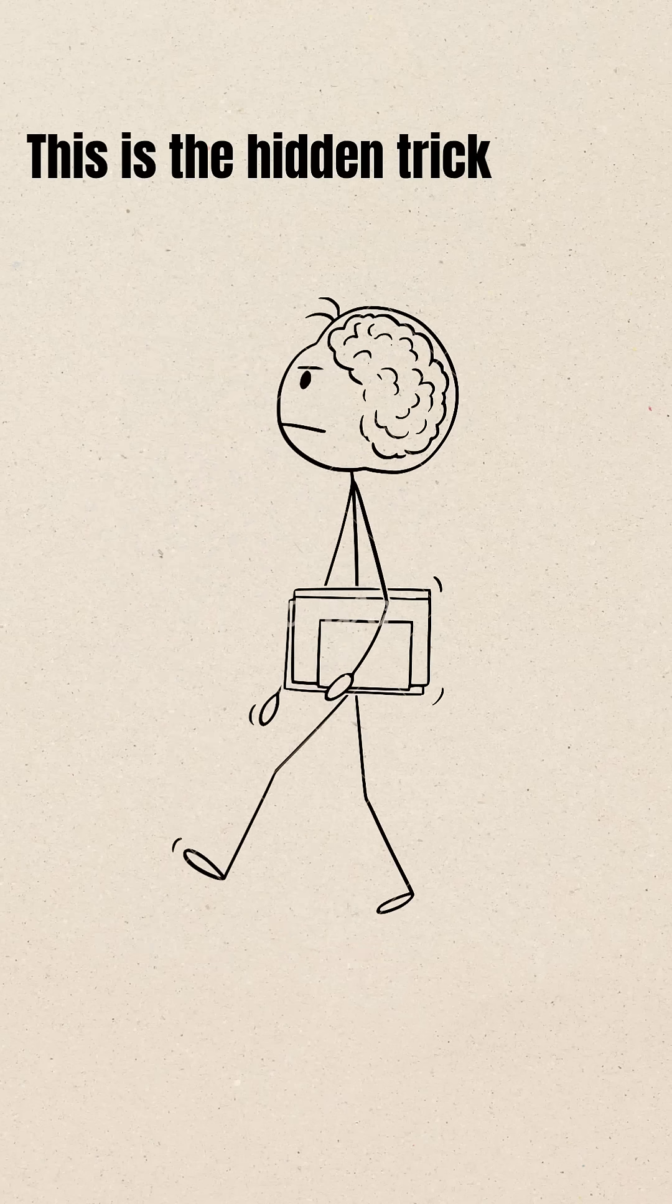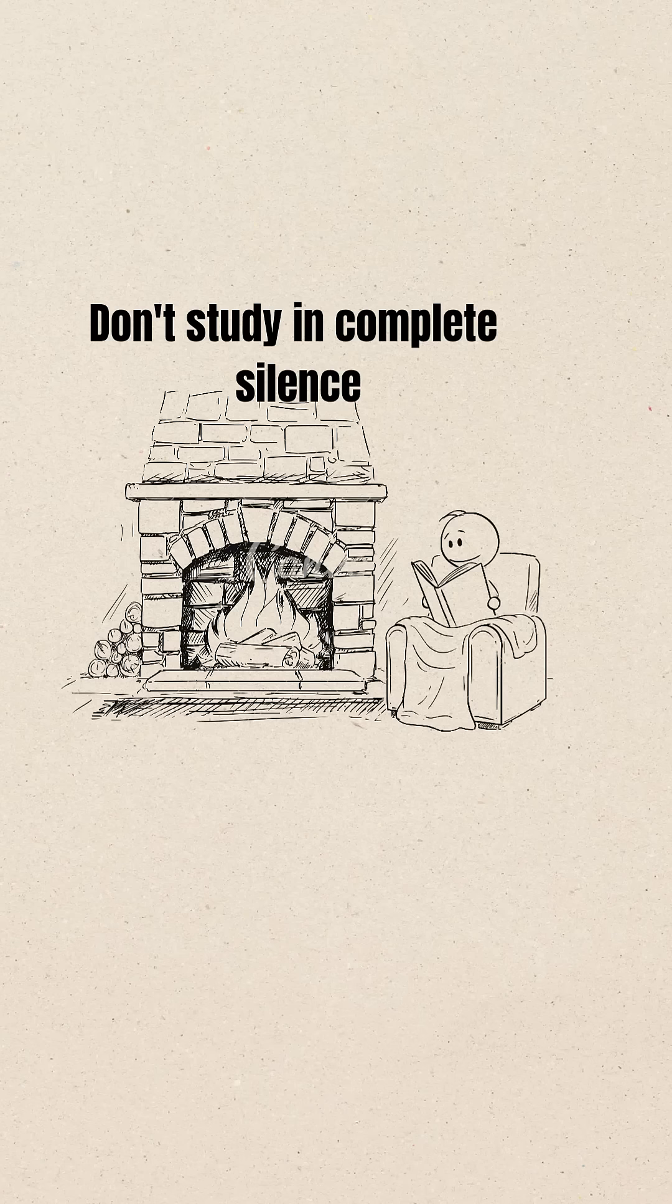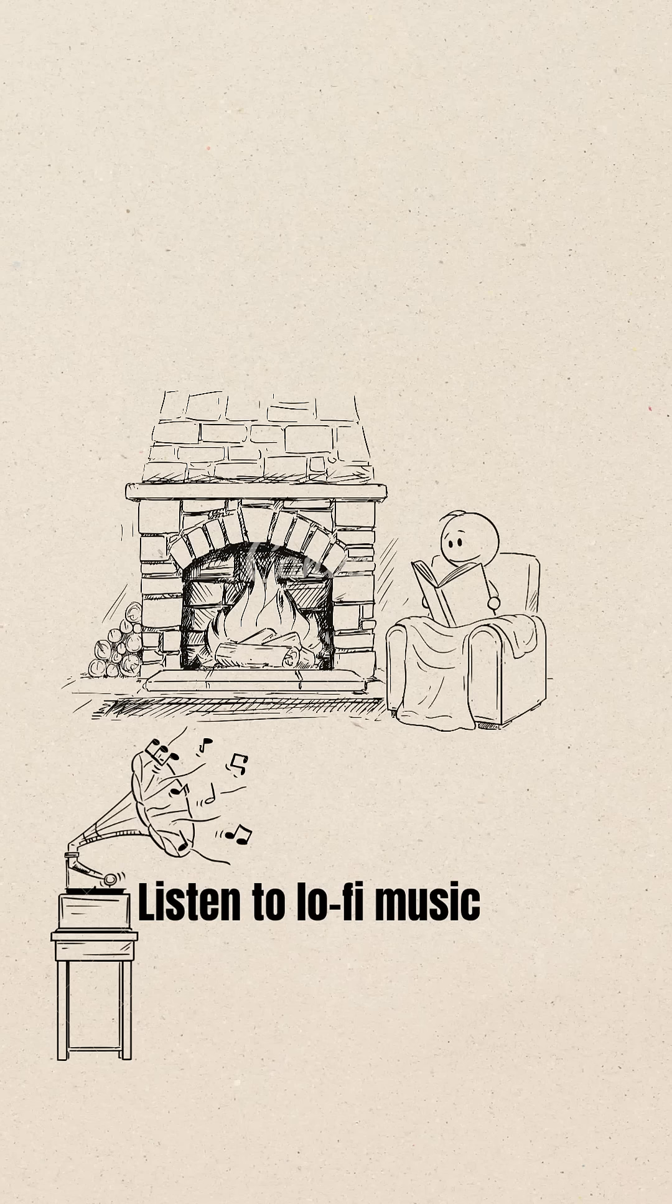This is the hidden trick top students use. Trick number three: Smart background noise. Don't study in complete silence. Listen to lo-fi music or use white noise. It blocks distractions and keeps your mind calm and focused.